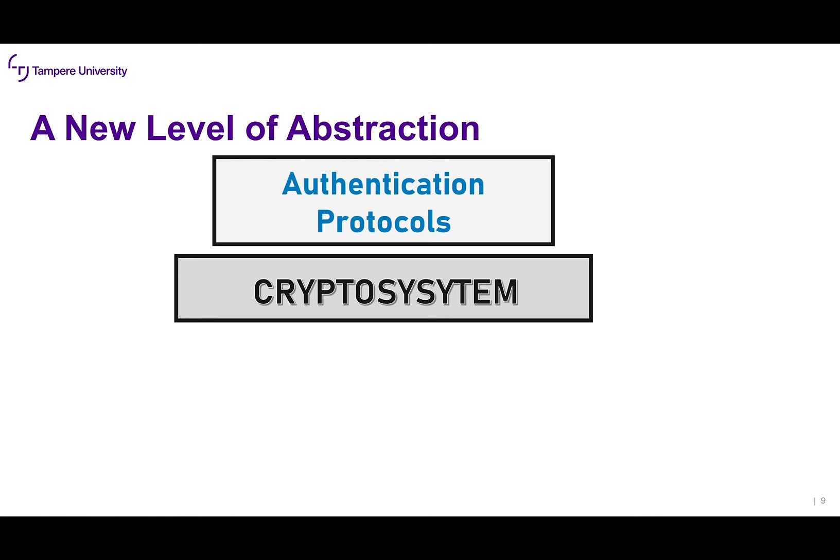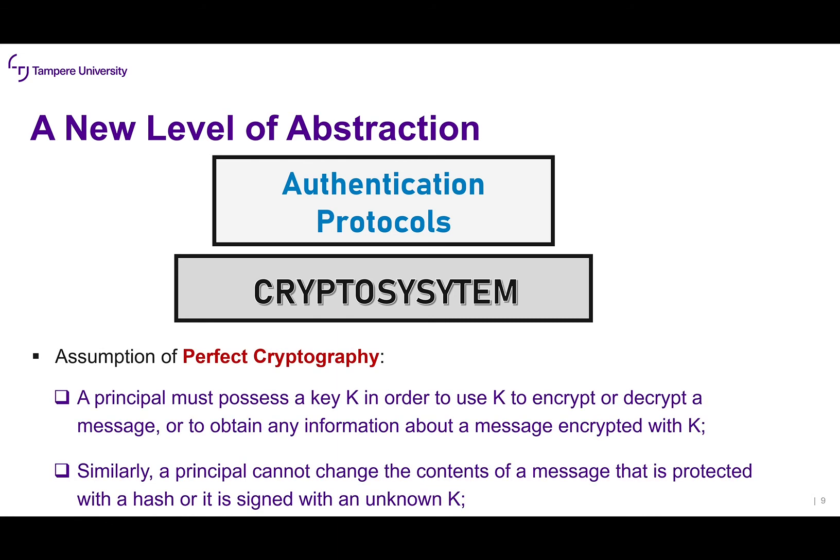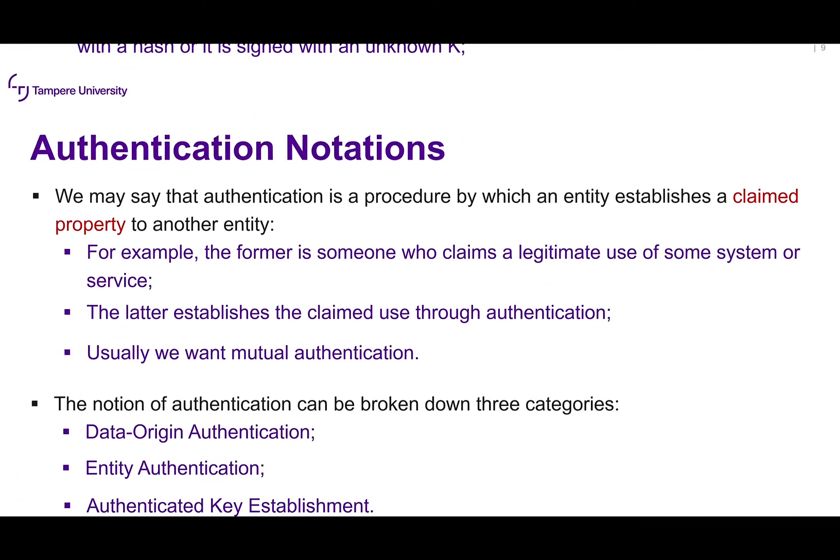Authentication protocols are the most important layer of protection needed for secure communication within computer networks. It's very important that we build secure, privacy-preserving, and integrity-protecting authentication protocols. When designing authentication protocols, we assume perfect cryptography: a principal must possess a key K in order to use K to encrypt or decrypt a message, or to obtain any information about a message encrypted with K. Similarly, a principal cannot change the contents of a message that is hashed or signed with an unknown K.